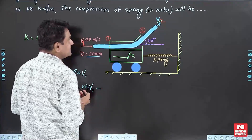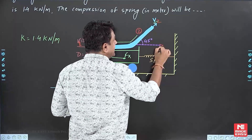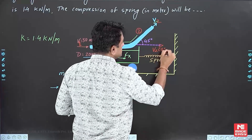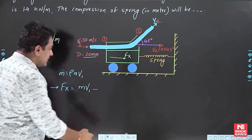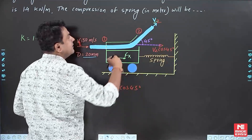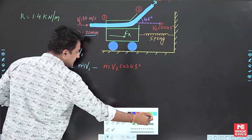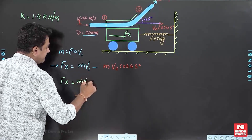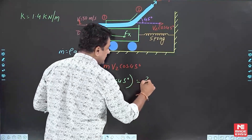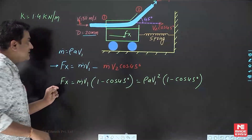At exit, the jet leaves at velocity v2 at 45 degrees. Since we want the momentum in the x-direction, we take the component v2·cos45°. So the final momentum is m·v2·cos45°. Since the velocity over the car is the same, v2 equals v1. Taking m and v1 common, the force becomes ρ·A·v1² × (1 − cos45°).